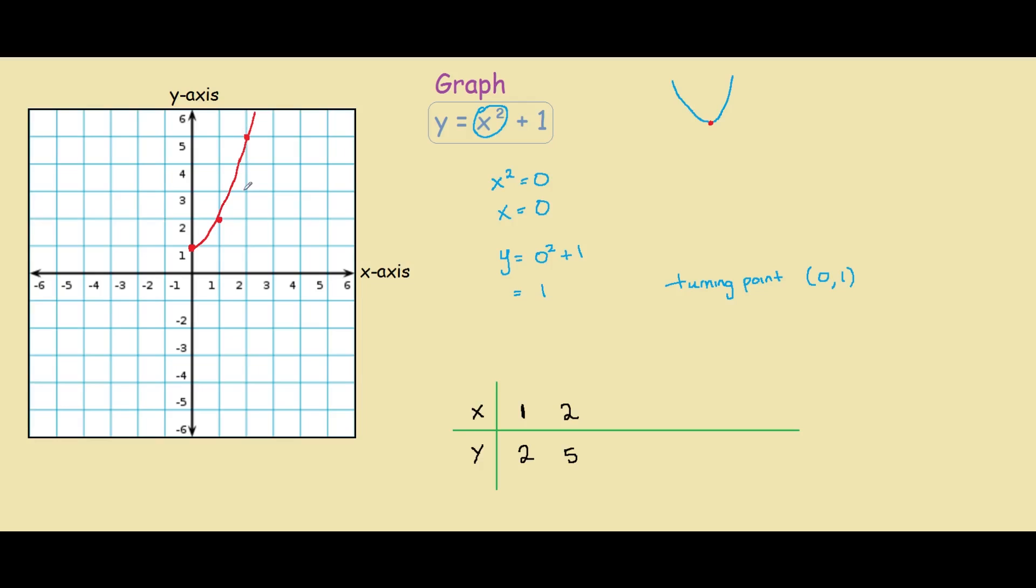Since we found the turning point of this parabola, we can just reflect the points onto the other side of the y-axis, so like this, and then like this.